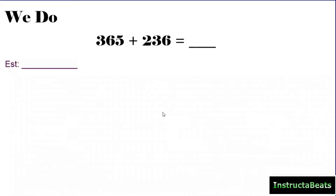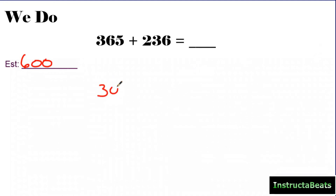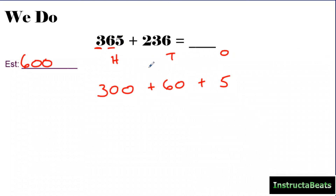Let's use these steps and do this we-do problem together. This we-do problem should be in your notes. First I want to estimate — I'm going to round 365 to 400 and 236 to 200, so I think my answer should be about 600. Our estimate doesn't have to be exact; I just want to make sure our answer is reasonable. Step one: I'm going to write my numbers in expanded form, lining up my place values vertically. I have 300 plus 60 plus 5, and I'm adding to that 200 plus 30 plus 6.